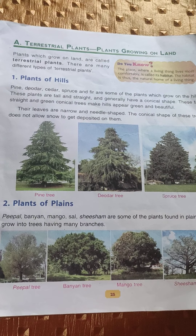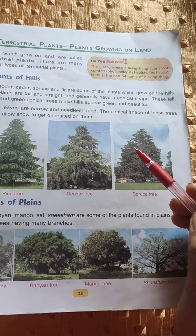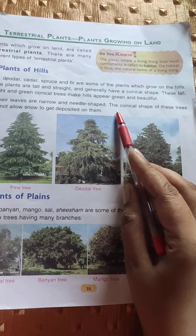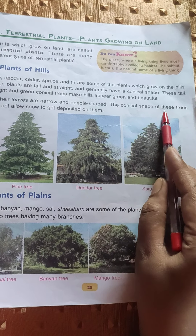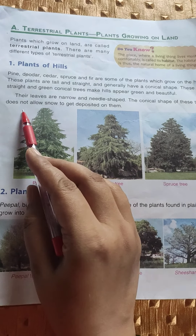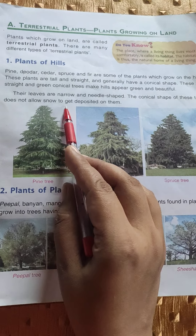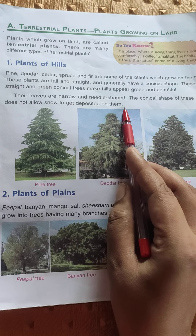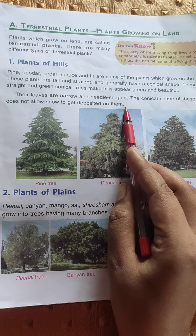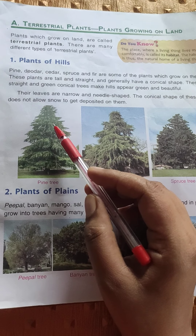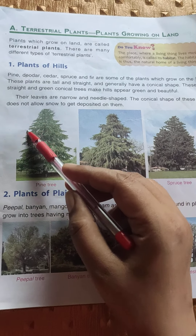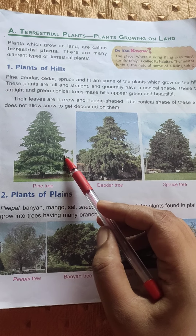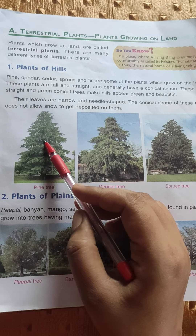As we know, there is heavy snowfall in hilly areas. The conical shape of these trees does not allow snow to get deposited on them. Due to this conical shape, snow will not get deposited on them.